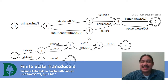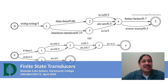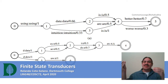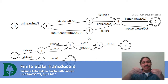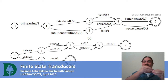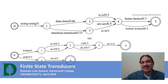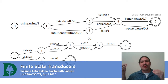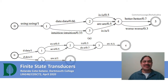Let's talk about finite state transducers. They're very similar to finite state machines, except they take an input and then produce an output for every transition between the states. We can use this to transform one string into a different string.